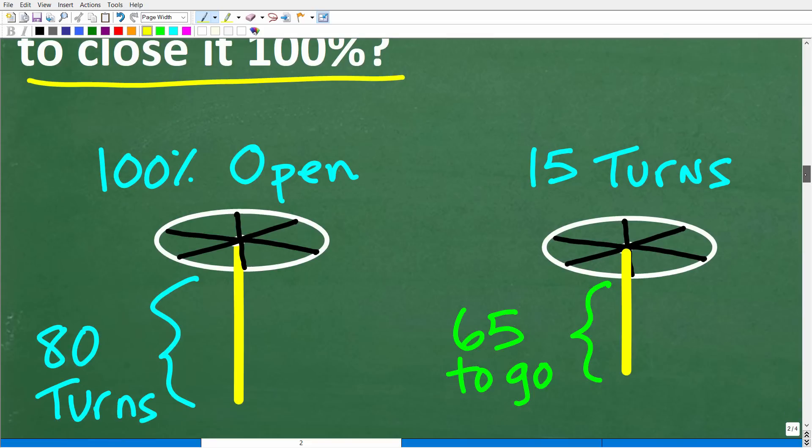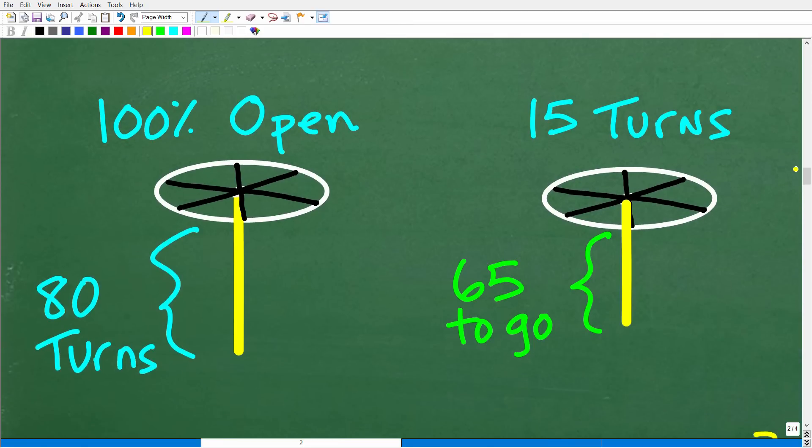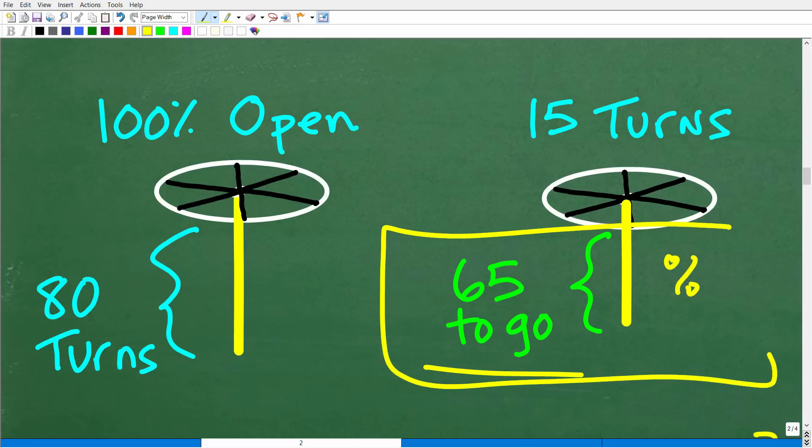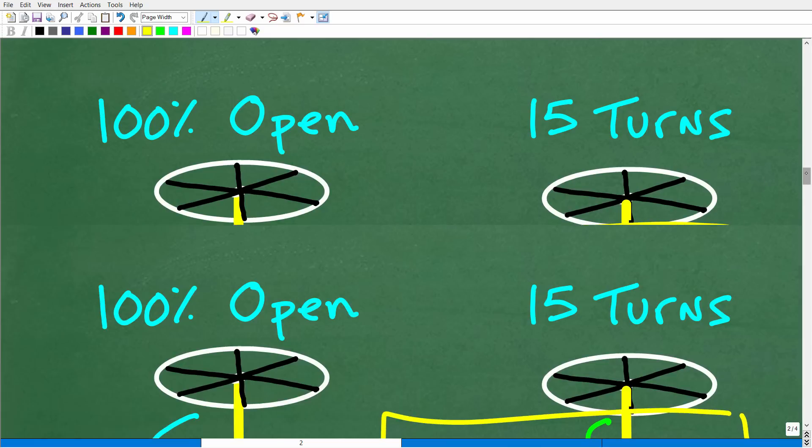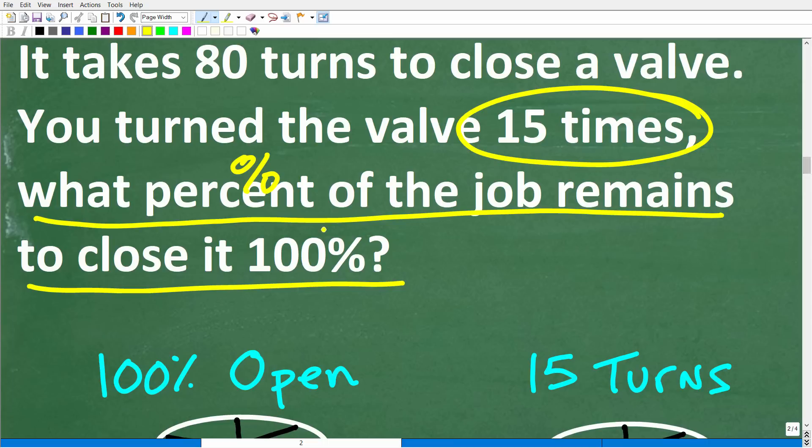So the actual math question is what? Well, if we have 65 more turns to go, okay, so that's what we're really interested. This is the percent of the job that remains, right? So this is what remains. Remember, the question is asking right here, what percent of the job remains, not what percent of the job did you already complete. So what percent of the job remains is equivalent to 65 turns.